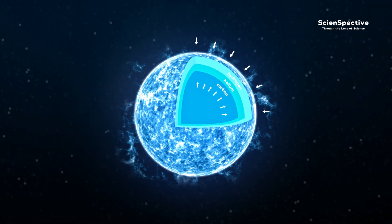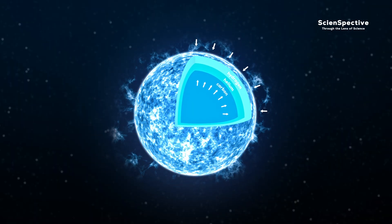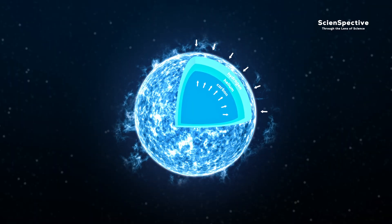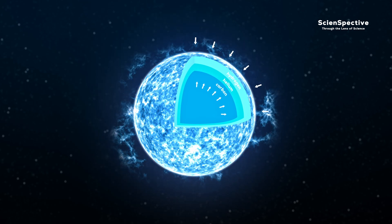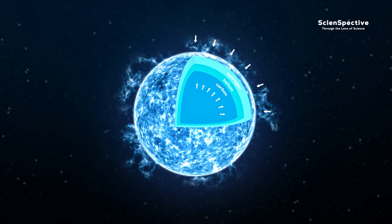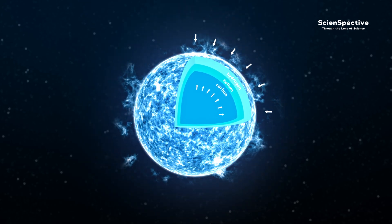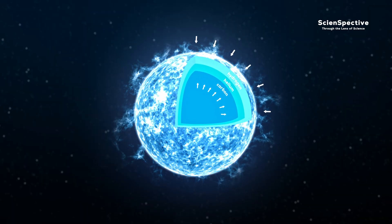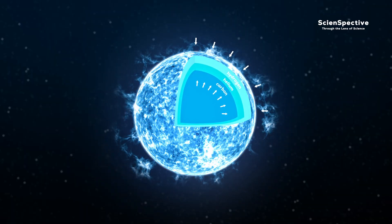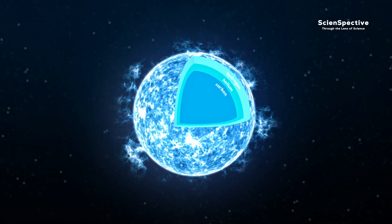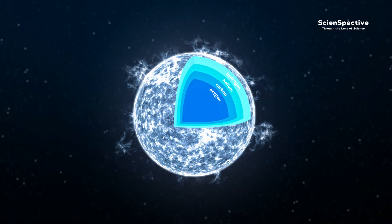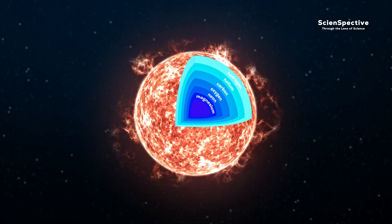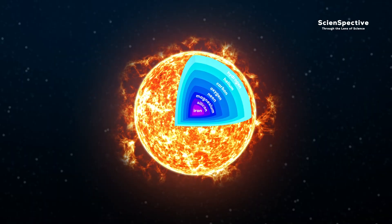However, these nuclear reactions no longer produce enough energy to maintain the balance between outward thermal pressure and inward gravity. Each layer continues to shrink, raising the core's temperature. Under higher pressure, heavier and heavier elements are formed. Carbon turns into oxygen, then neon, magnesium, silicon, and eventually iron.